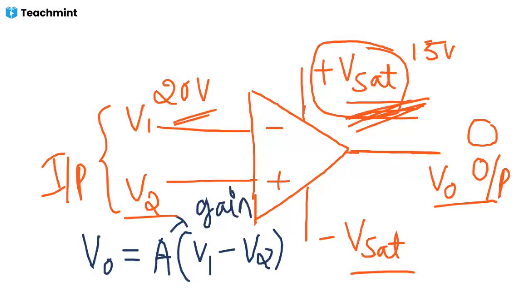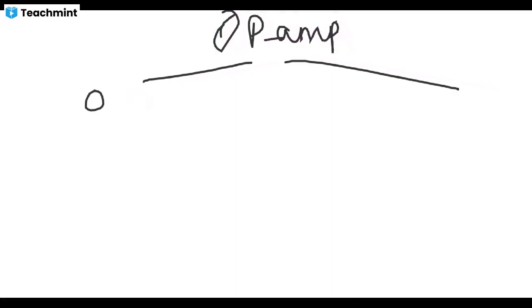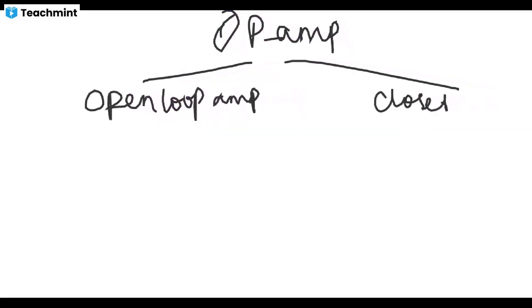There are two main types of operational amplifier configurations. The first one is the open loop amplifier, and the second one is the closed loop amplifier.